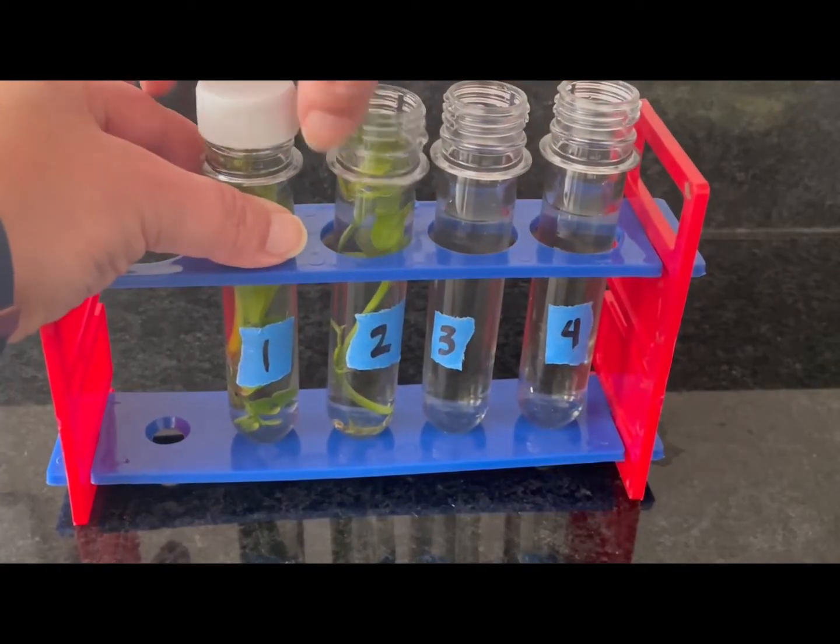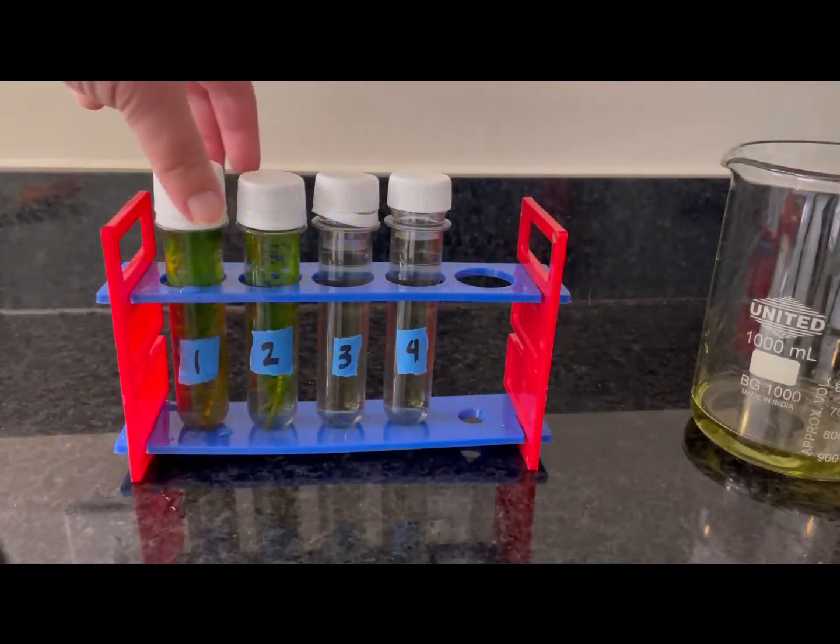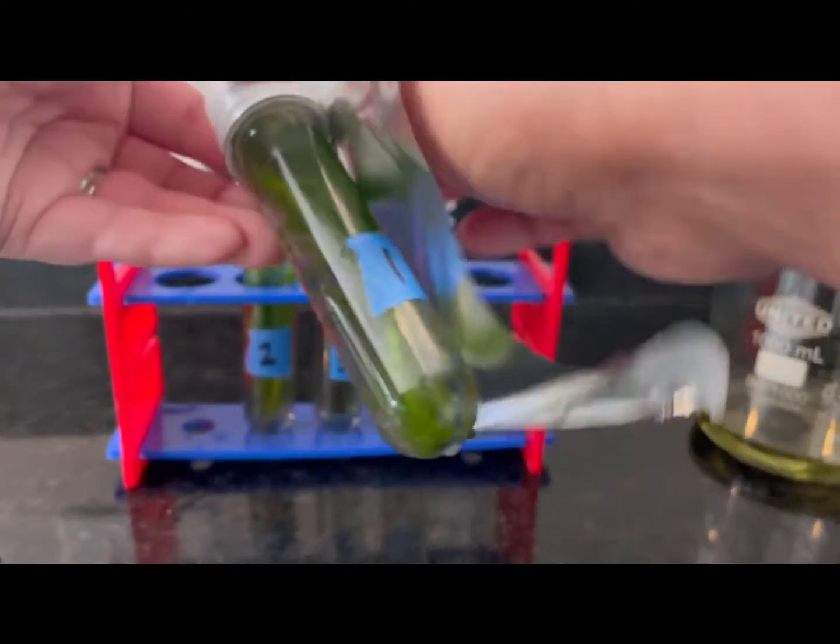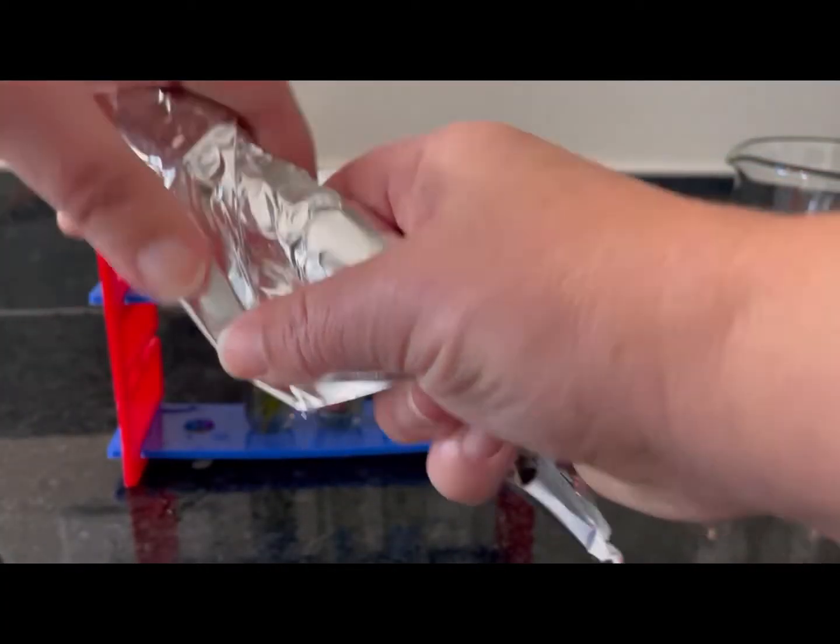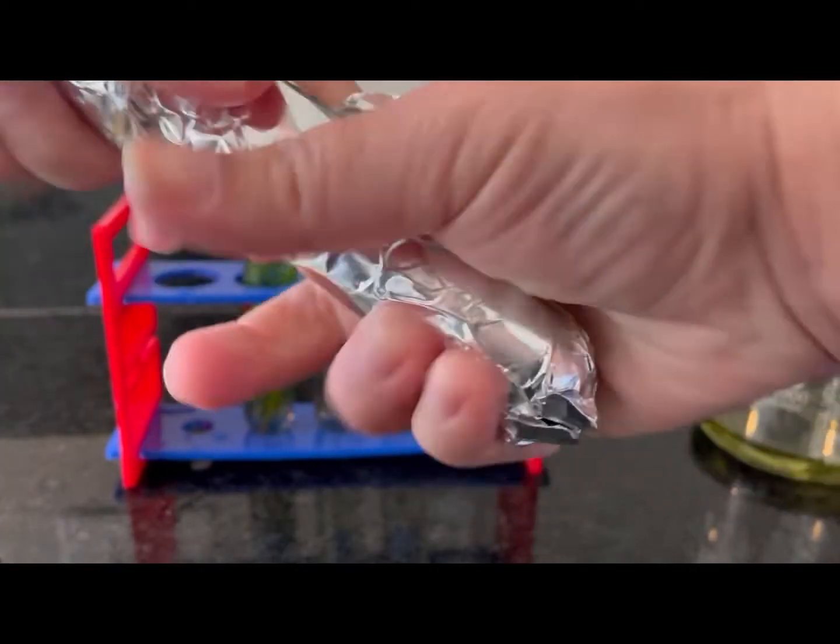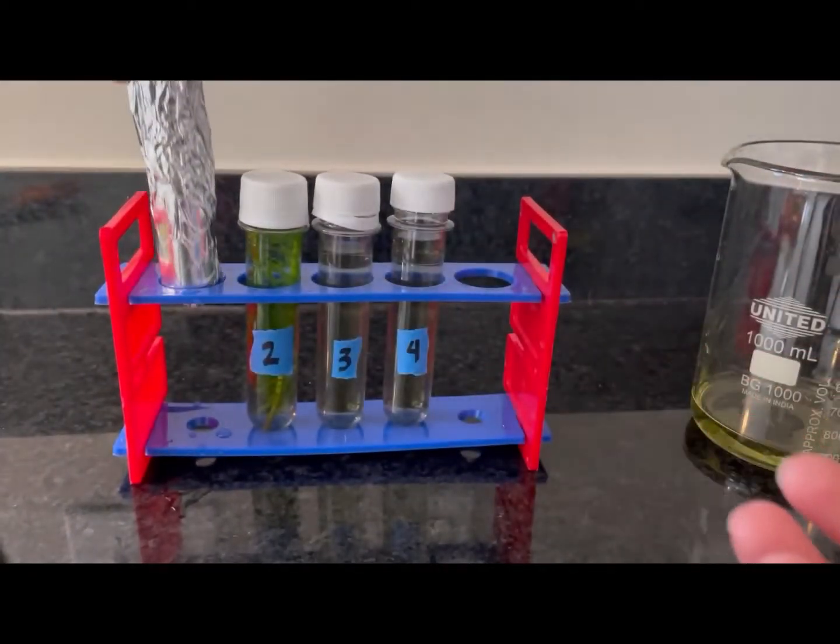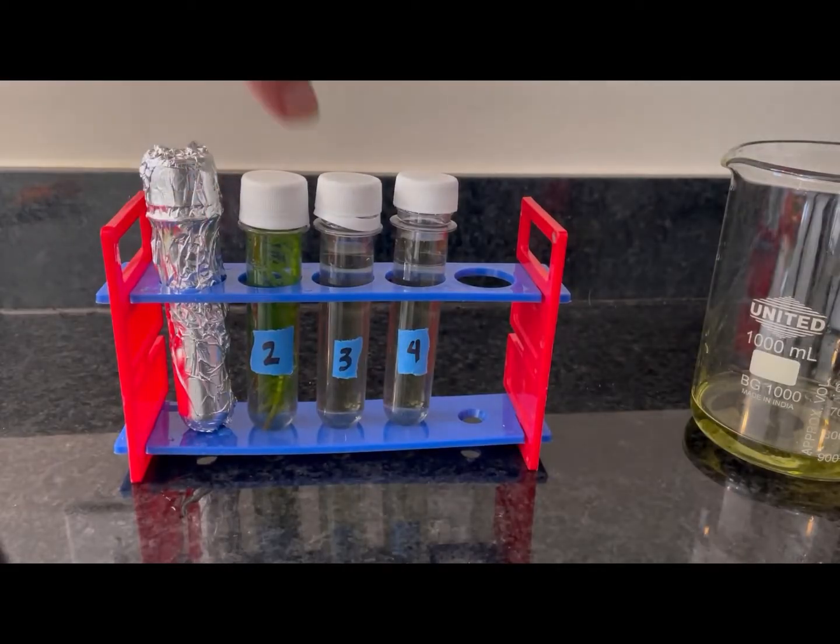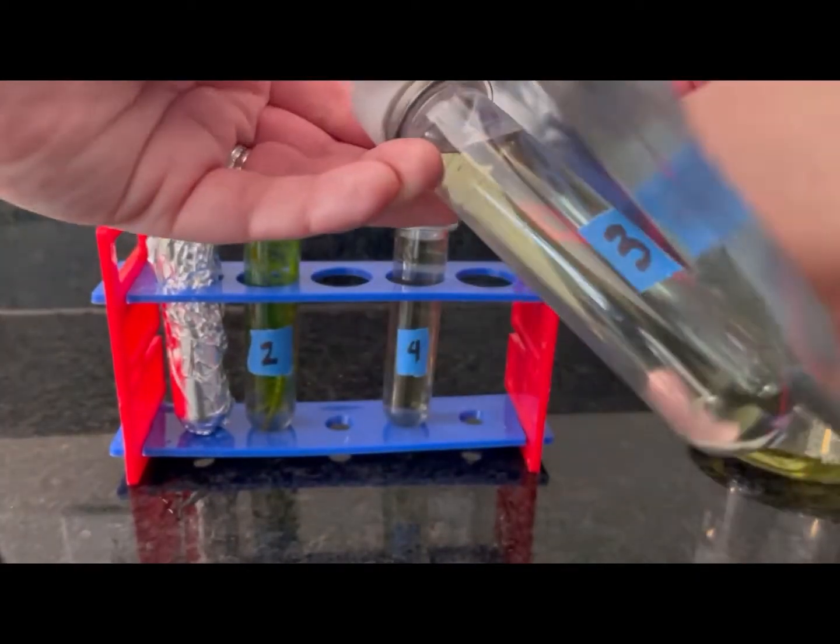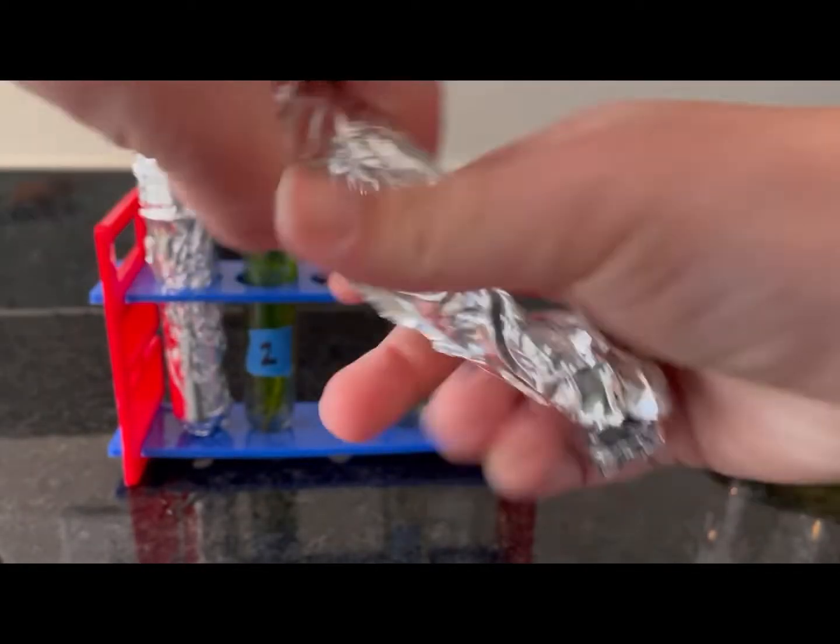Then you'll cap all four test tubes so that we're not exchanging air. Cover test tube number one with foil completely, and you'll do the same with test tube number three. So we have one in the dark with a plant and one in the dark without a plant.